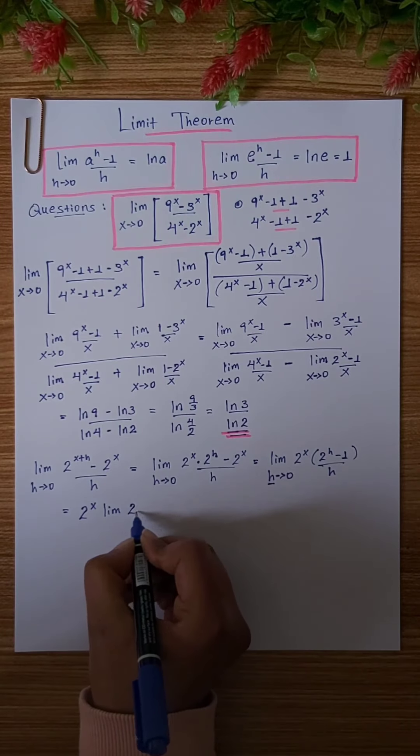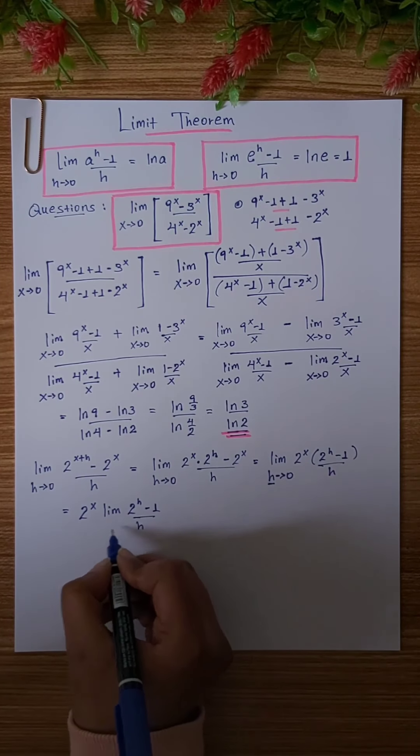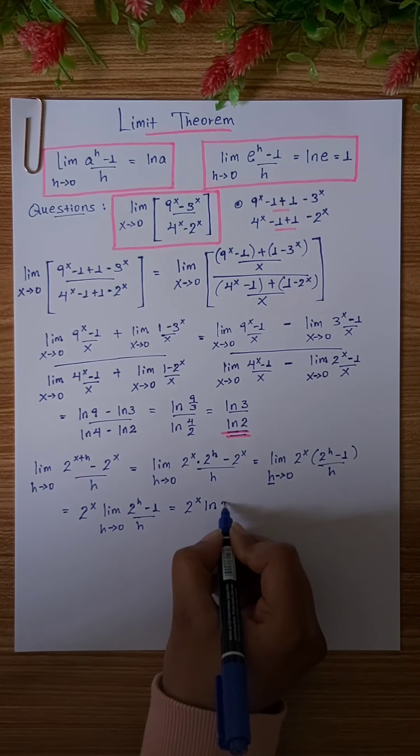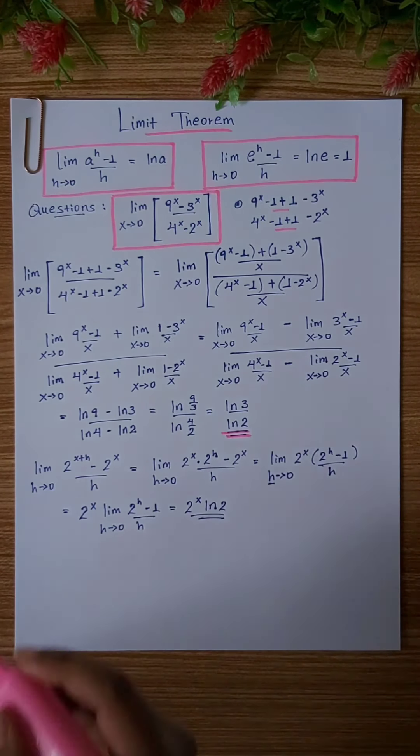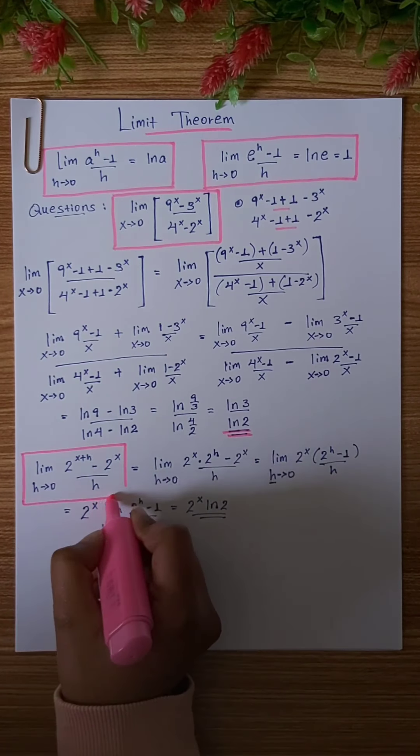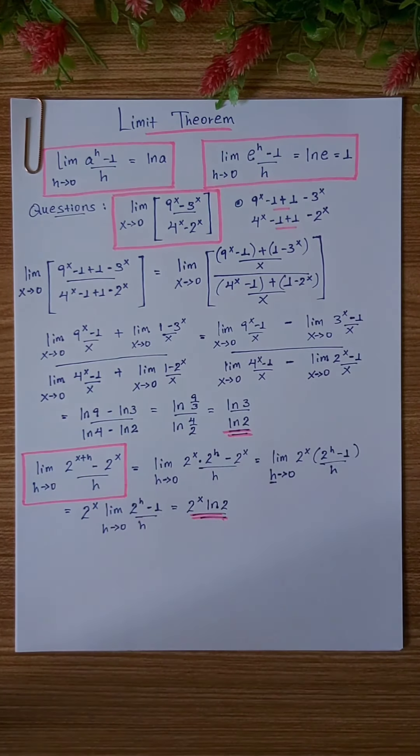We have the constant 2 to the power of x, and using the formula a to the power of h minus 1 over h, the final answer is 2 to the power of x times ln 2.